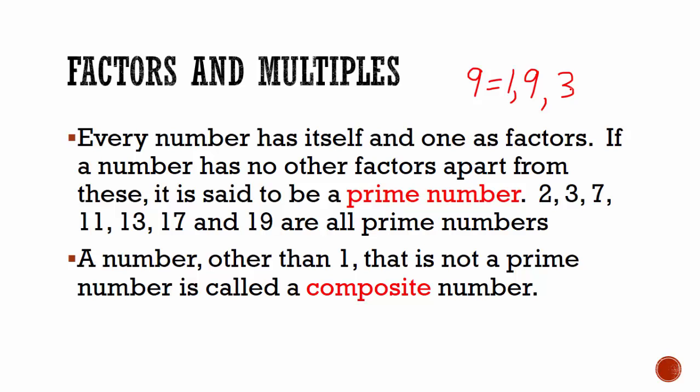You can check it yourself and you would realize that 2, 3, 5, 7, 11, 13, 17, and 19 are all examples of prime numbers.